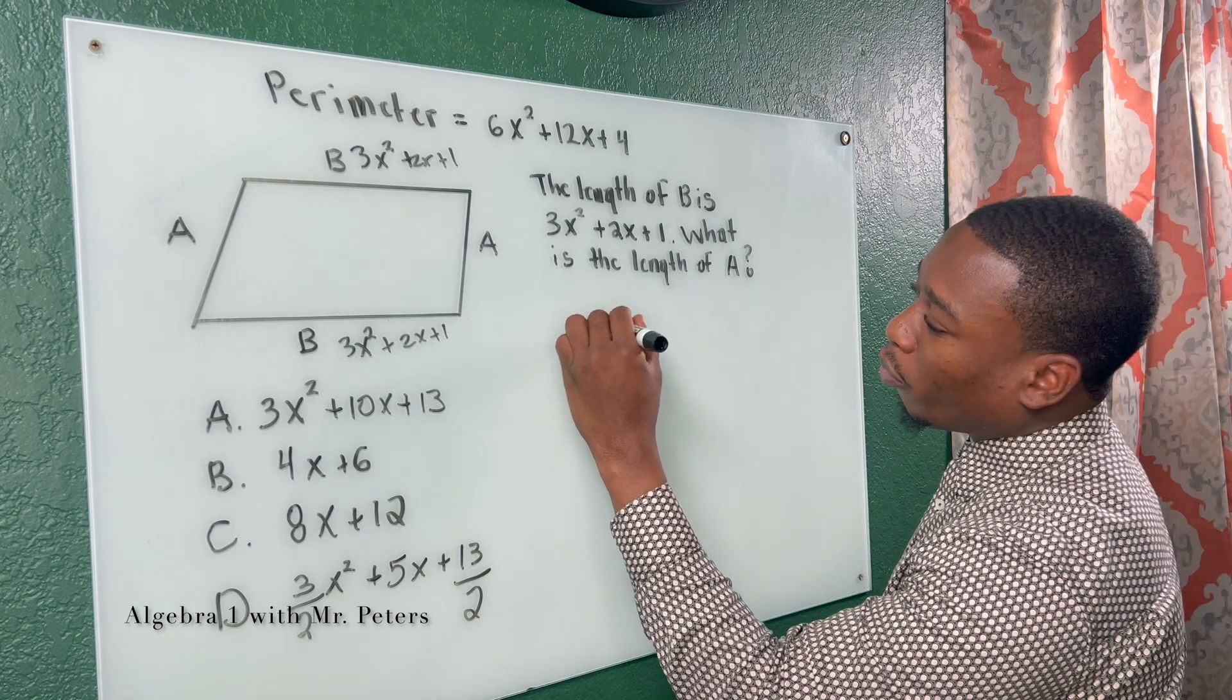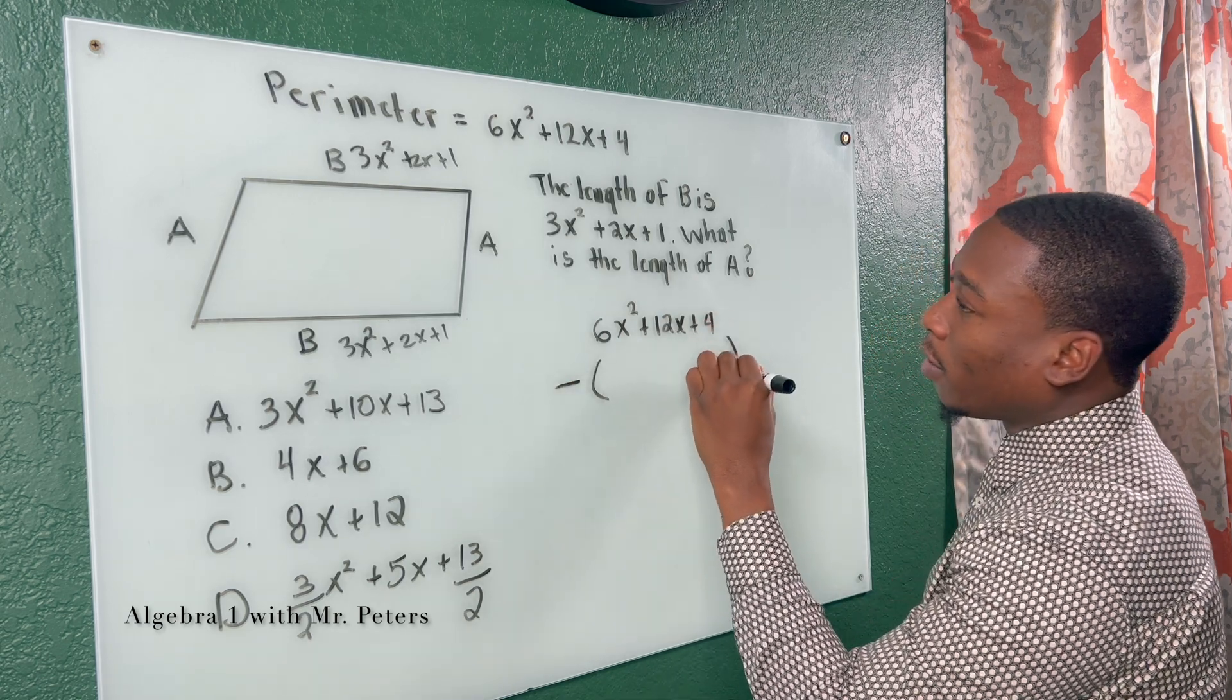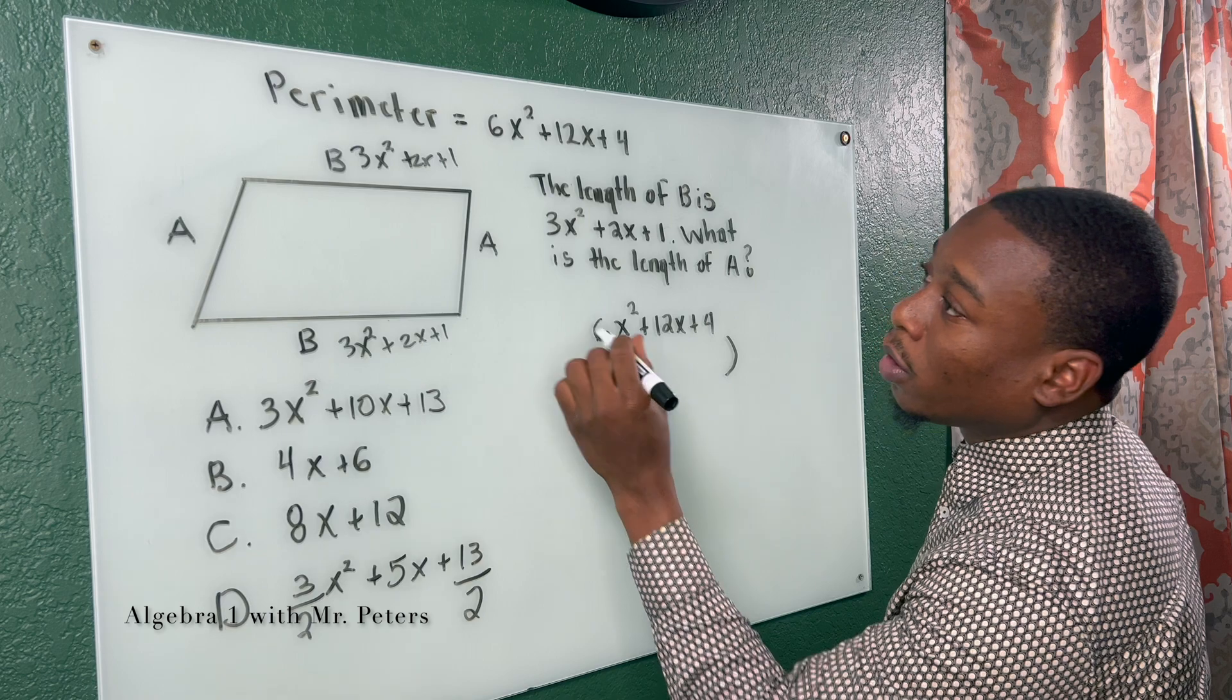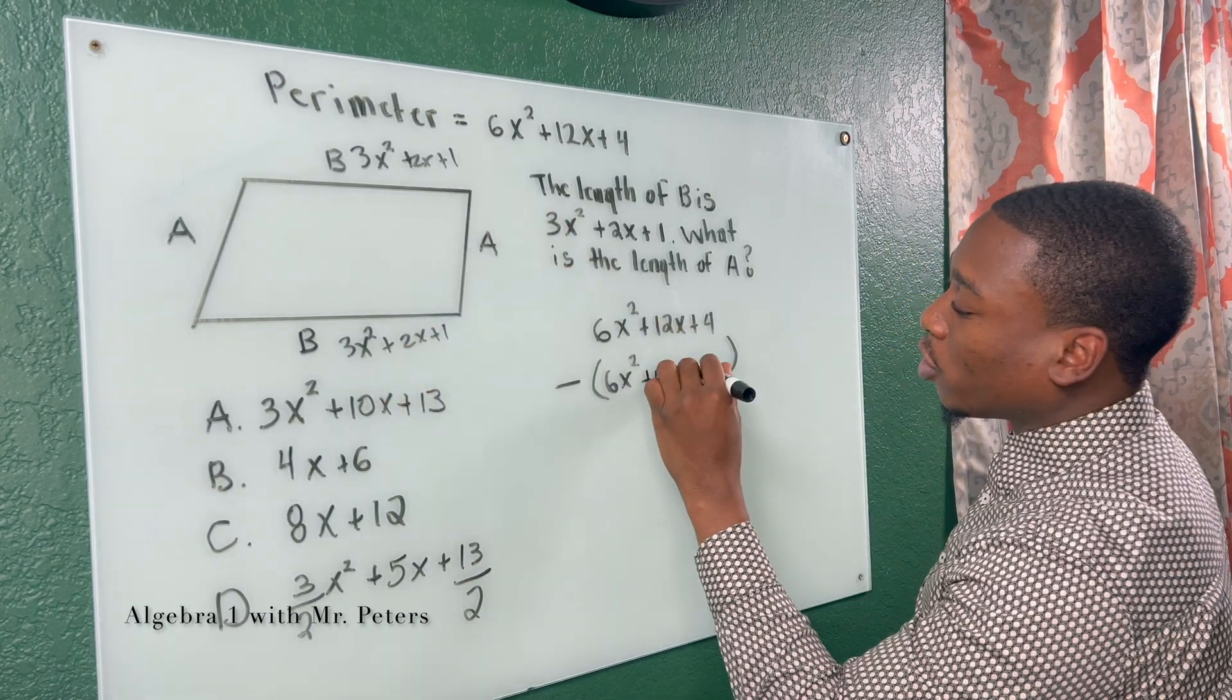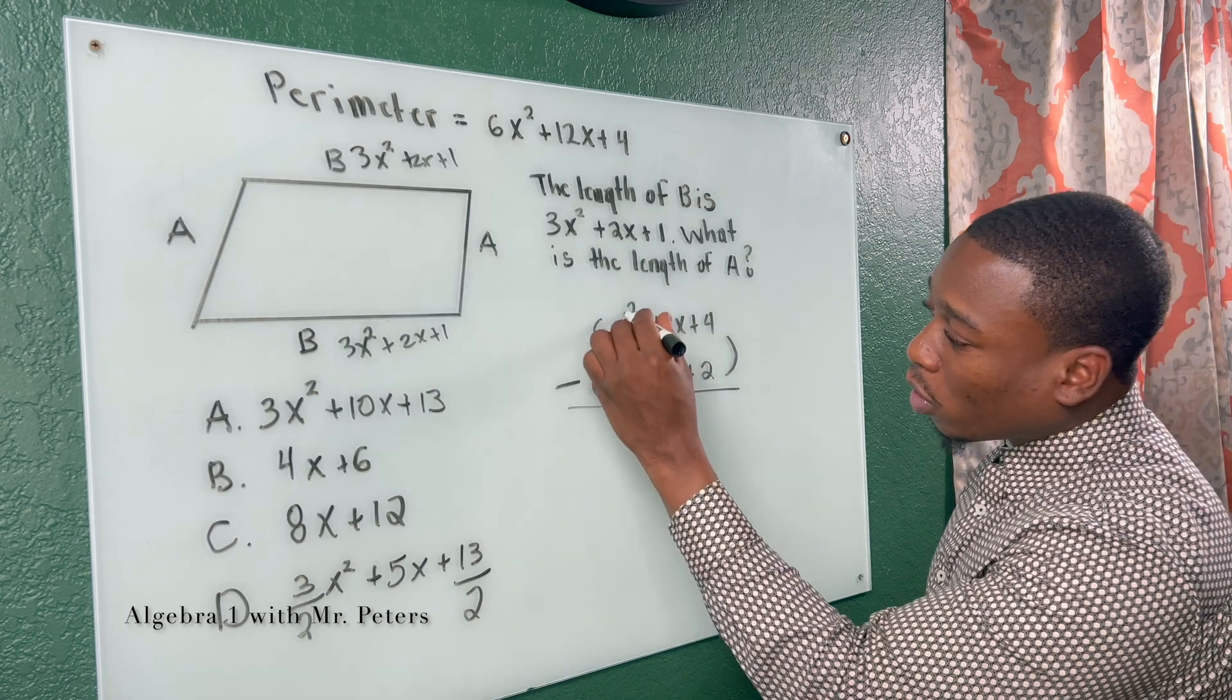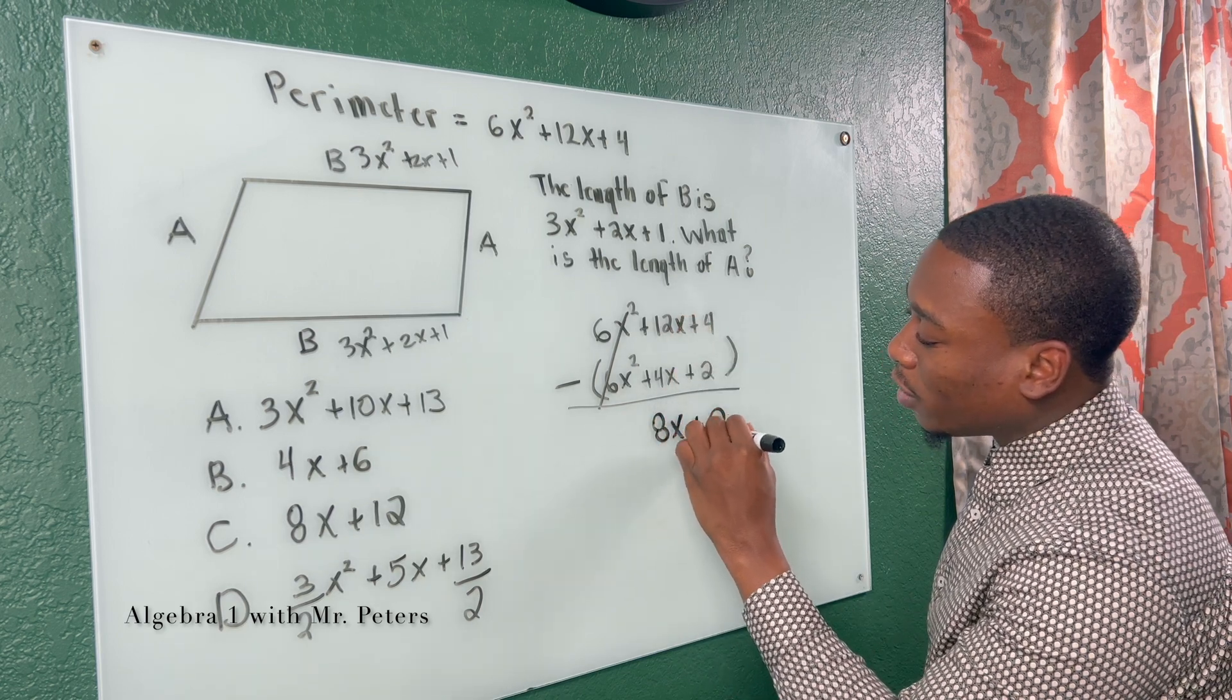So now I fill it in because we have to subtract to figure out what A is. So we know the perimeter is 6x² + 12x + 4. And I'm going to subtract side B from it. So when I add side B with itself, 3x² plus 3x² gives me 6x². 2x plus 2x gives me positive 4x. And 1 plus 1 gives me 2. Now remember, we're subtracting, so the signs of all three of these change. So 6x² minus 6x² is 0. 12x minus 4x is 8x. And 4 minus 2 is just positive 2.